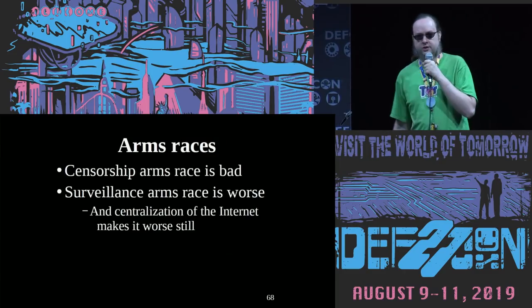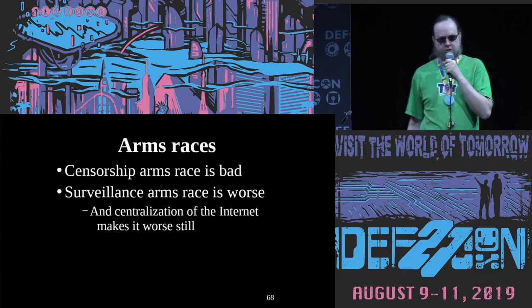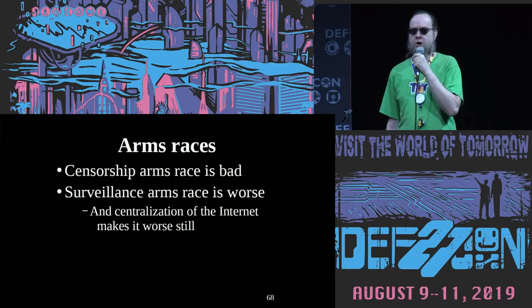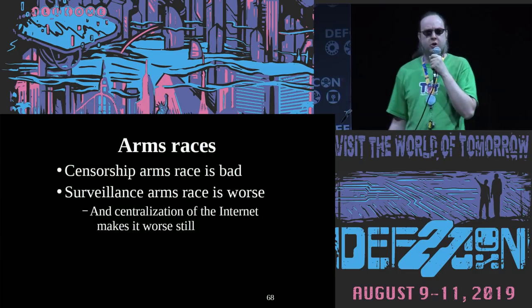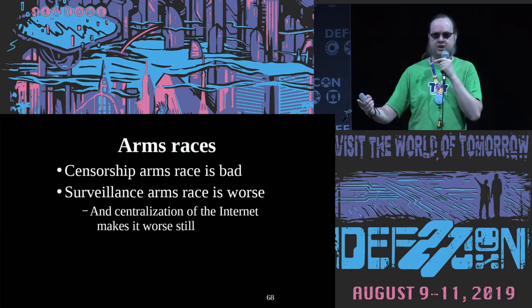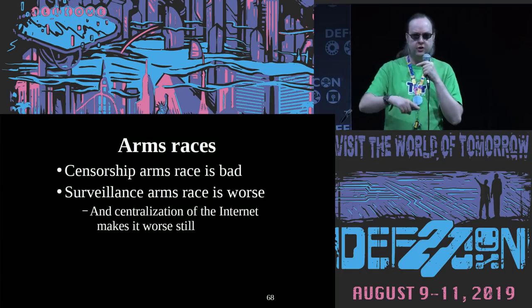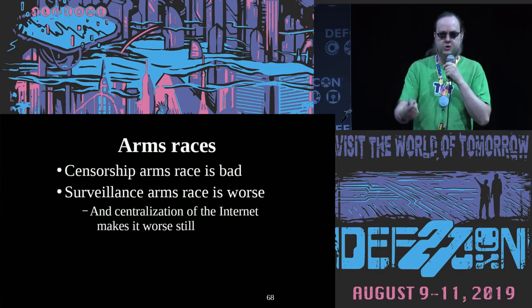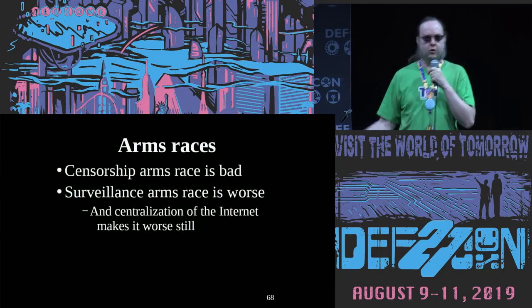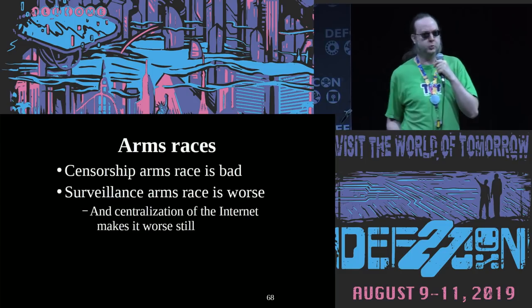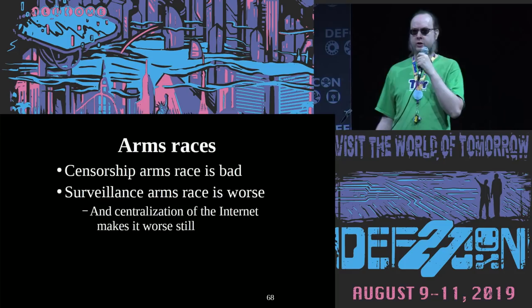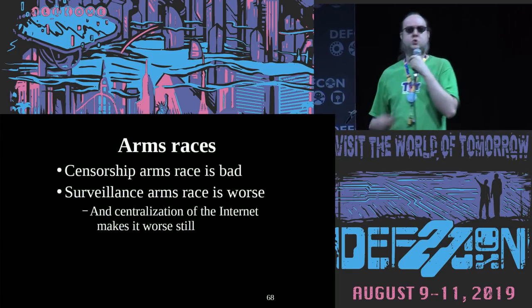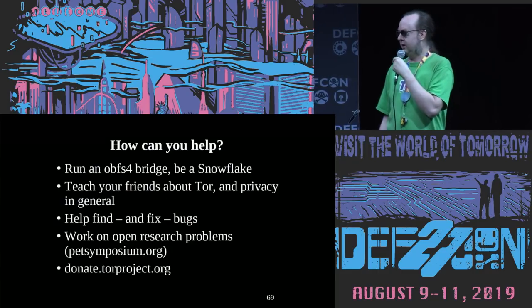The censorship arms race sucks because China has billions of dollars and there are companies like Cisco and Blue Coat building tools. The surveillance arms race is worse. At least in the censorship case: you try a thing, it doesn't work, you change it, it works. From the surveillance side: you try a thing, you don't know if they saw you, so you don't know if you need to change it — and there's no feedback loop. Maybe we need a new Ed Snowden coming out every week with a new set of documents. I don't know how to end up with that feedback loop in a way that you can tell whether the surveillance is working.